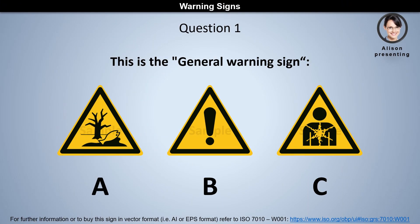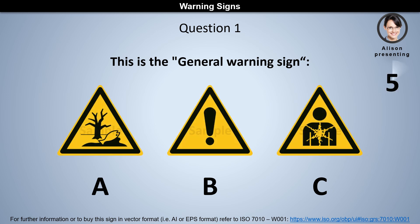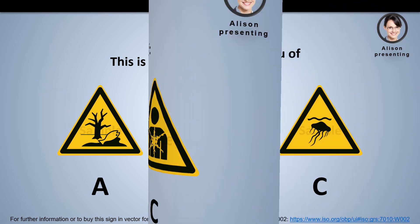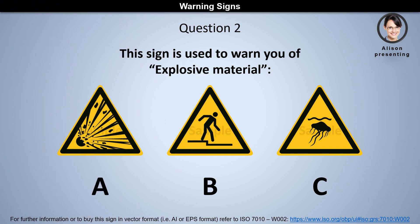Question 1: This is the general warning sign. Is it a, b, or c? The answer is b. Question 2: This sign is used to warn you of explosive material. Is it a, b,